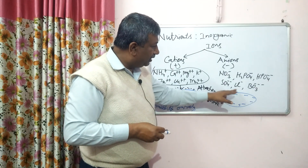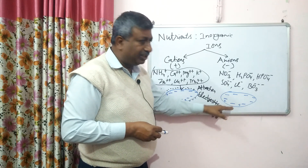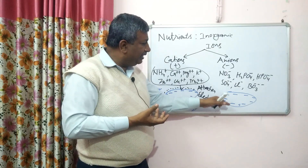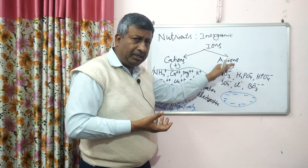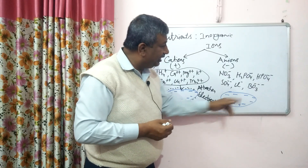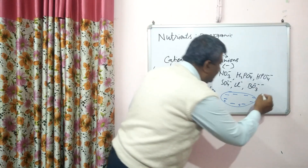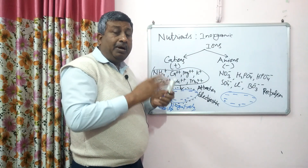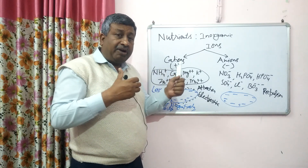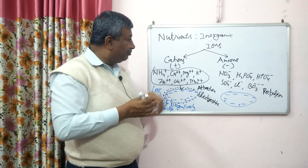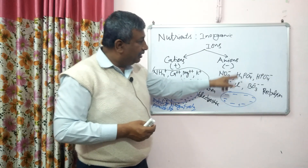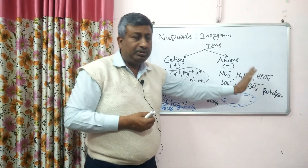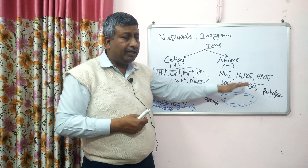The clay particles are negatively charged. Because anions also carry a negative charge, there is electrostatic repulsion between them. This repulsion pushes anions away from the clay surface, so they remain in the soil solution. Since they are present in the soil solution with water, they are more available and more mobile.